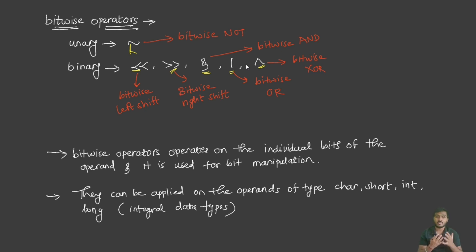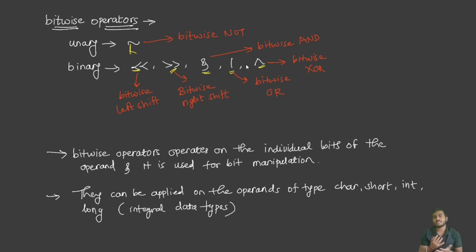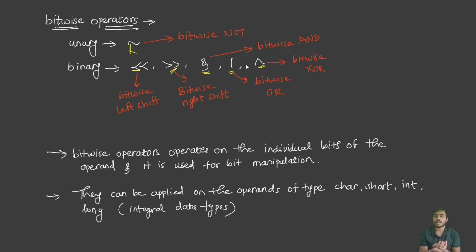Let's quickly revise the bitwise operators we have in C++. We have unary: bitwise NOT, also called the negation operator. We will discuss each operator in much more detail so you will understand exactly what each one does. Then we have bitwise left shift, bitwise right shift, bitwise AND, bitwise OR, and bitwise XOR.